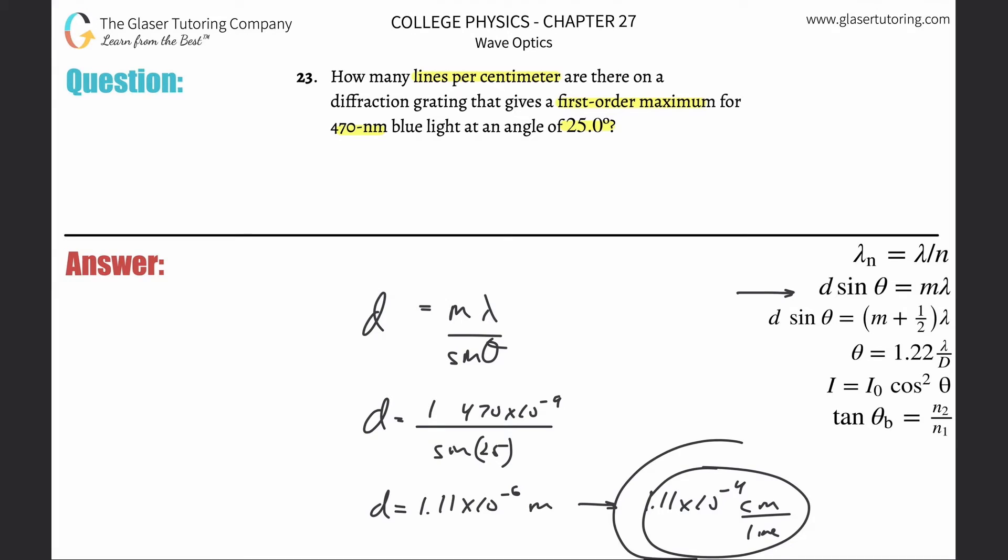So all you got to do is literally just flip this. It's 1 over 1.11 times 10 to the minus 4th centimeters, with lines in the numerator. When you do this in the calculator, just take that, multiply by 100, then do 1 divided by that value.